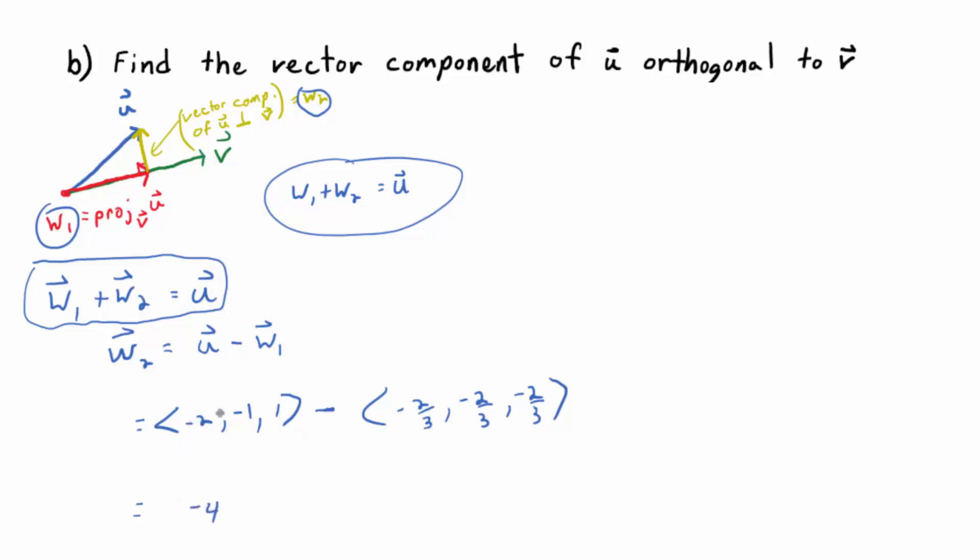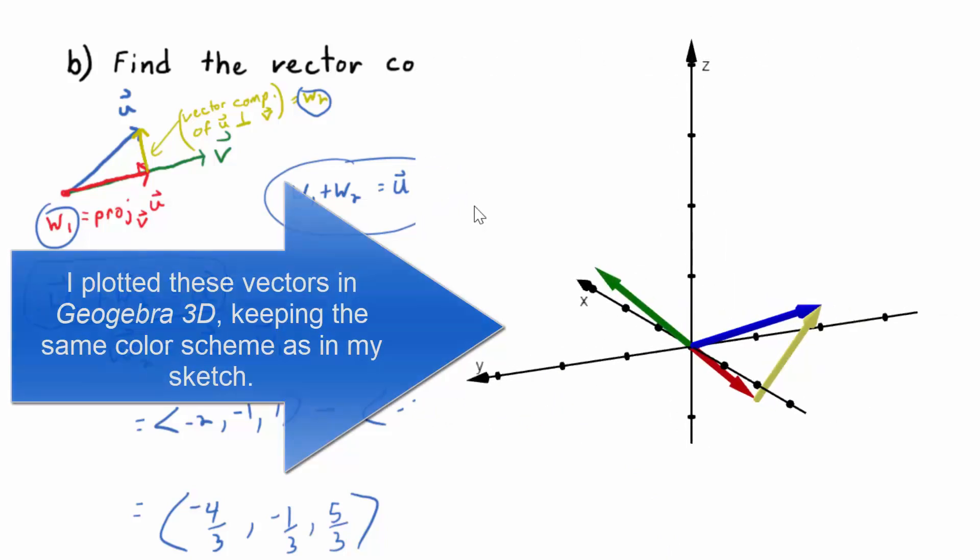So what's negative 2 plus 2 thirds? Negative 4, so think of negative 2 as negative 6 thirds, right? Multiply by the common denominator. So negative 4 thirds, everybody with me? Okay, negative 1 is negative 3 thirds plus 2 thirds. What's that? Negative 1 third. And then this is positive 1. So 3 thirds plus 2 thirds? 5 thirds.